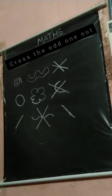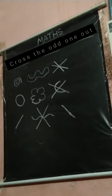This is the curve line, so cross the hard one out. Understood, children? Good children. Thank you, children.